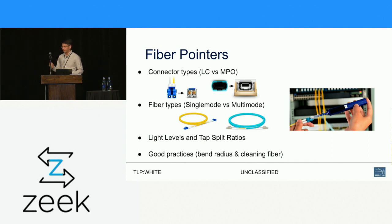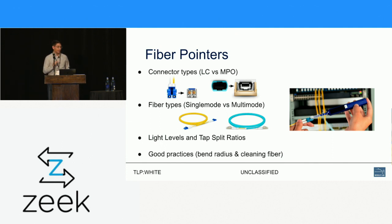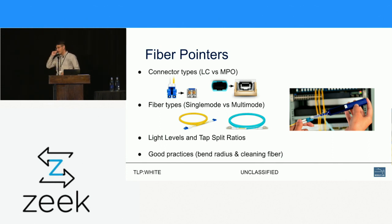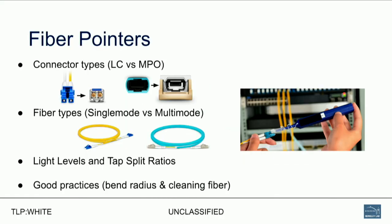Other things can affect whether you're getting enough light on the far end, like bend radius or fiber cleaning. There are even stranger things that can happen with dirty fiber. At Supercomputing 2015, we ran into an issue with a 100 gig link that would come up with good light levels, and you could do a 10 gig performance test across it no problem. But when you tried to do 100 gig, it would drop packets everywhere. We cleaned the fiber and reseated the connector and it worked fine — the theory was that error correction couldn't keep up with all the errors, causing drops only at higher bandwidths.